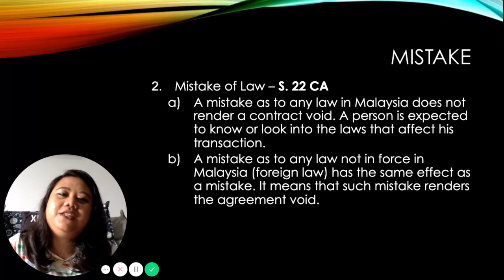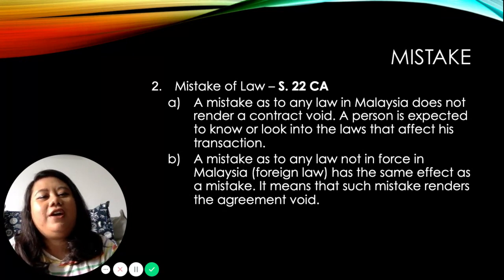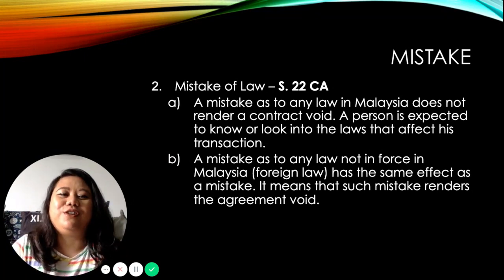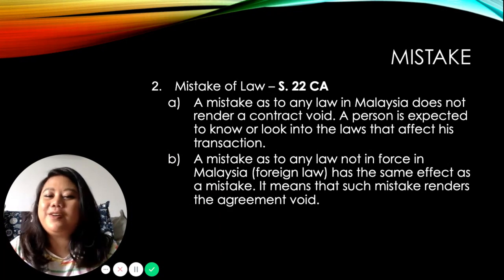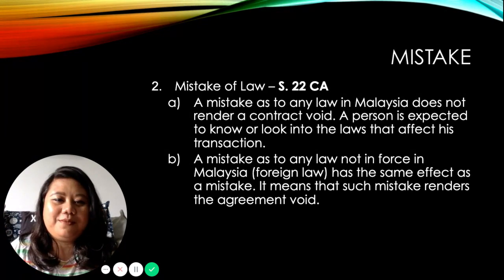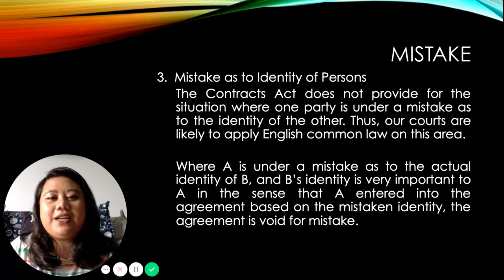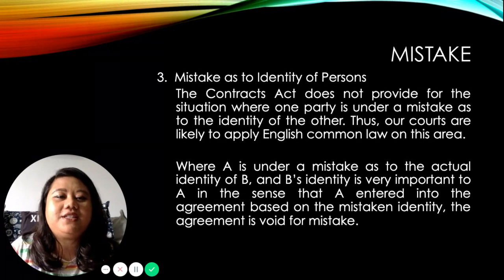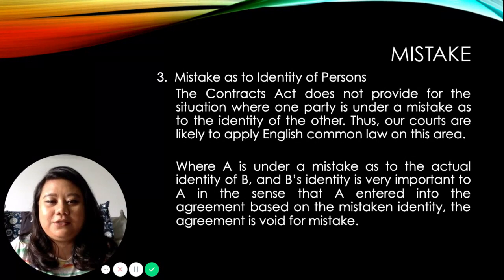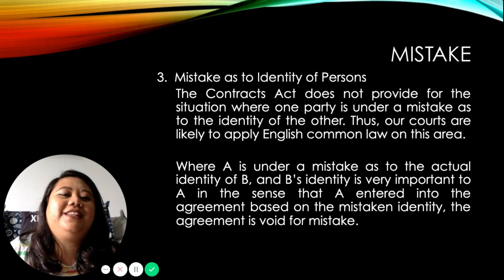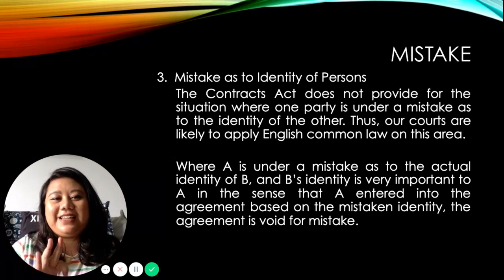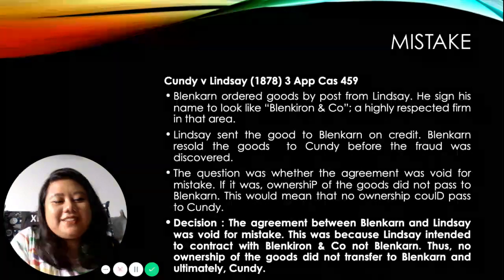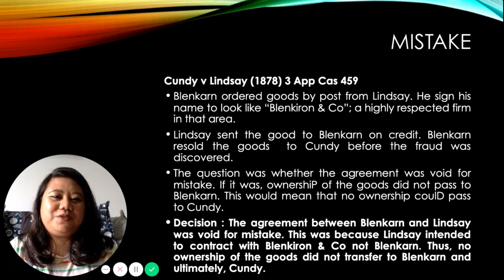Mistake of law, under Section 22 of the Contracts Act, does not render the contract void. A person is expected to know the laws that affect their transaction because not knowing the law is no excuse in Malaysia. There is also a third type — mistake as to the identity of the person — which has no specific section in the Contracts Act but is covered by English common law cases. The relevant case is Kandi and Lindsay, which you can look up online for more details.